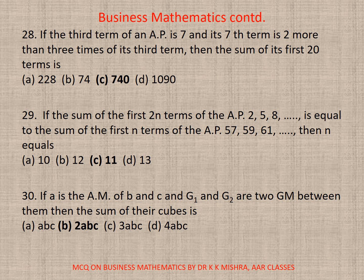Question 29. If the sum of the first 2N terms of the AP 2, 5, 8, etc., is equal to the sum of the first N terms of AP 57, 59, 61, then N equals, here correct option is C, 11. Now question number 30. If A is the AM of B and C and G1 and G2 are 2 GM between them, then the sum of their cubes is, correct option is B, twice ABC.